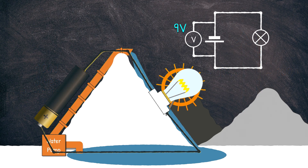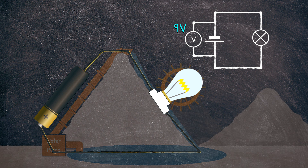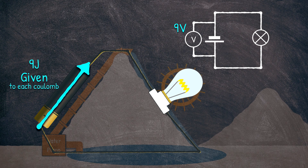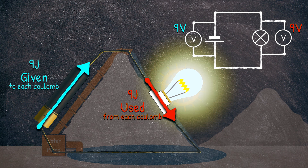This is comparable to an electrical circuit. Imagine we've got a 9 volt battery connected up to a light bulb. The 9 volt battery provides 9 joules per coulomb to the flowing charge. The electrical component — the light bulb in this case — takes 9 joules from every coulomb of flowing charge in order to do the work it needs to do, which is to provide light.